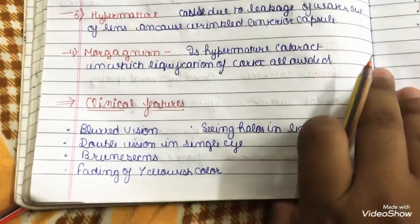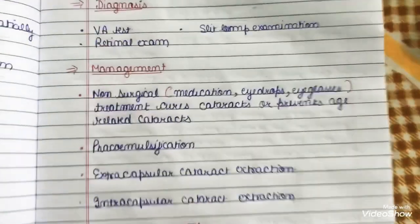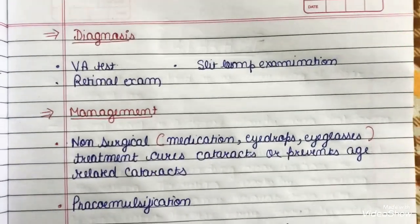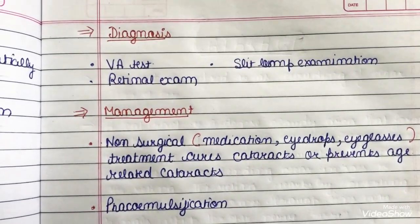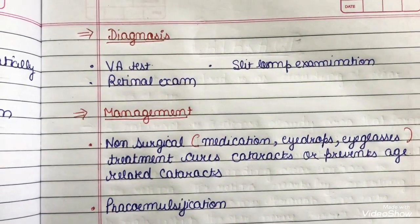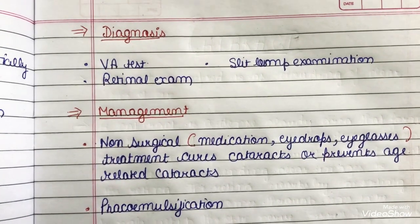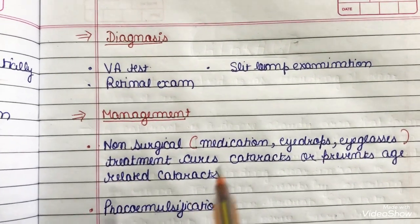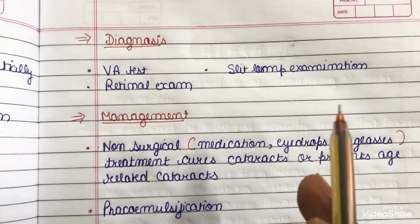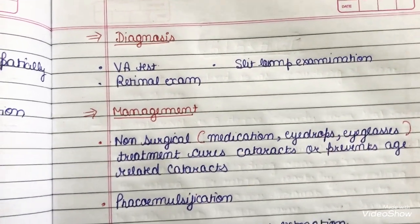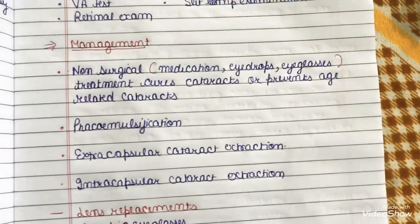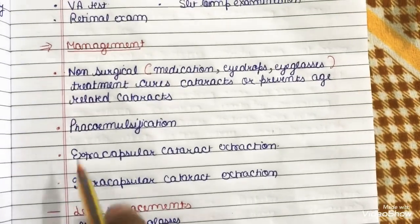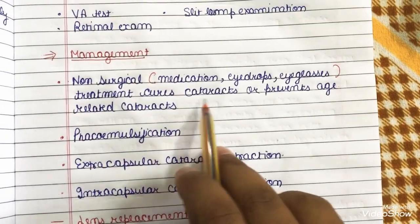For diagnosis, cataract can be detected through three examinations: visual acuity test, retinal exam, and slit lamp examination.